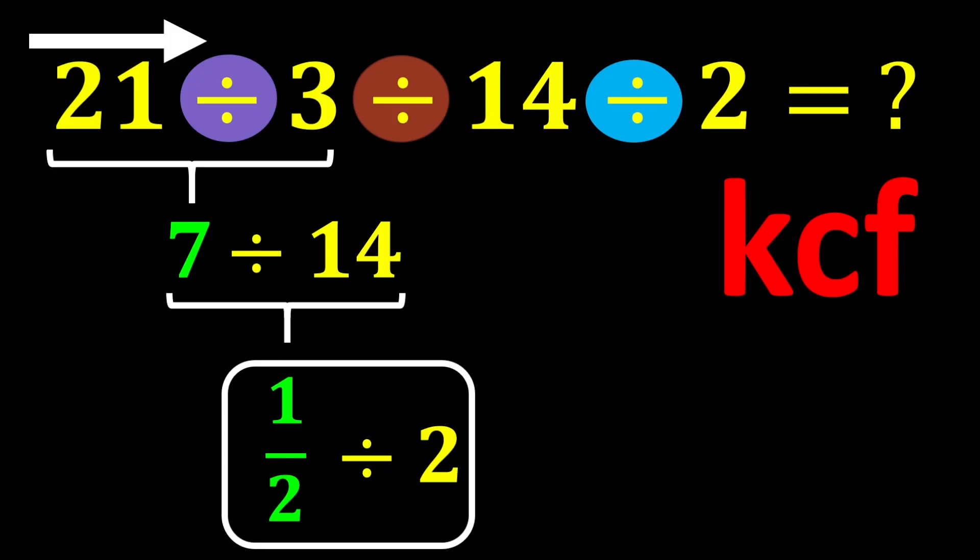According to this rule, we keep the first number as it is, change the division sign to multiplication, and flip the second number.